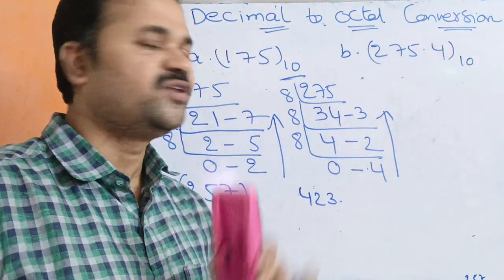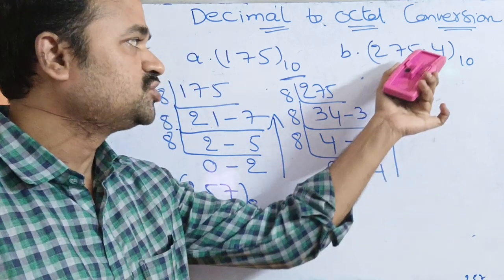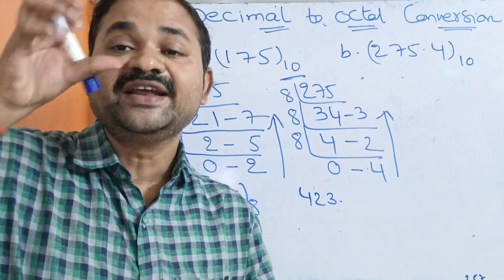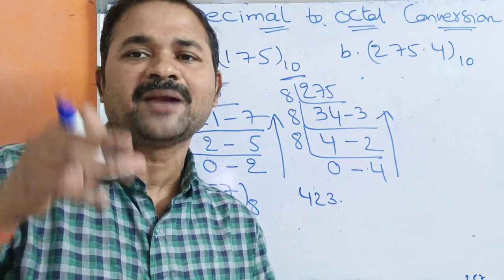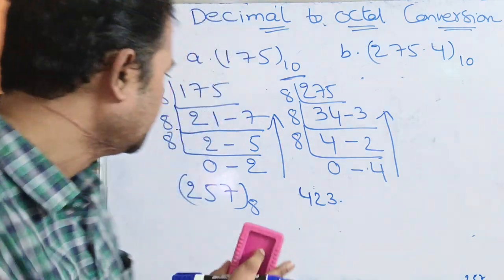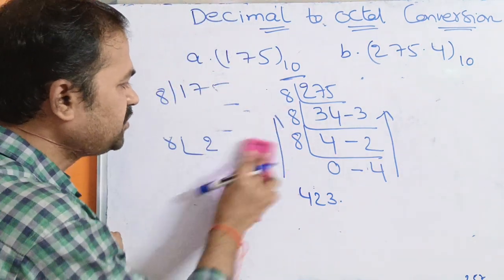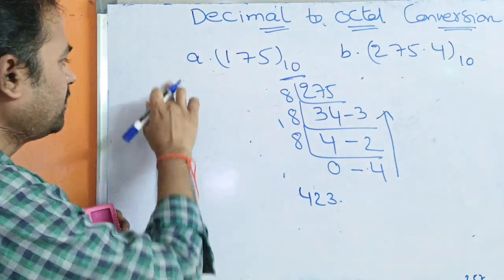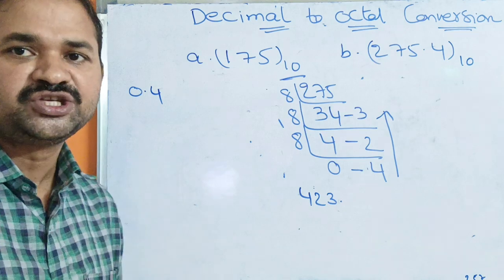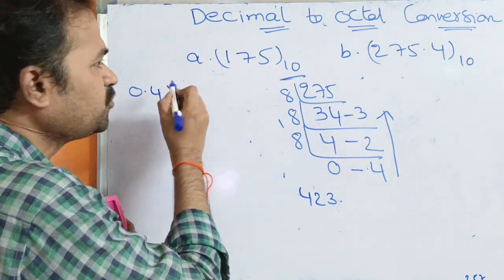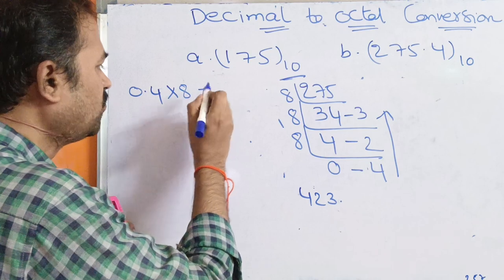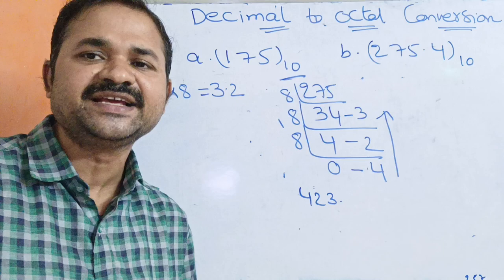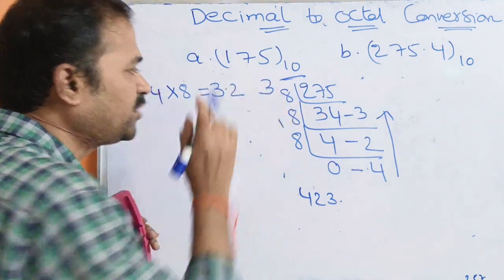Next we need to calculate for the fractional part 0.4. For a fractional part, we multiply the number by 8. So 0.4 multiplied by 8 equals 3.2. In 3.2, the integer part is 3, so we write down 3.